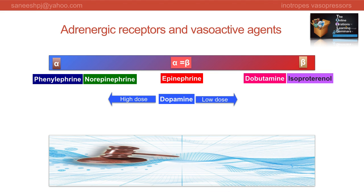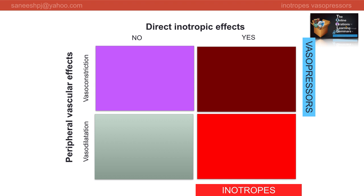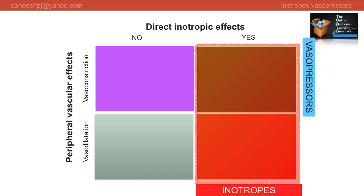Norepinephrine has predominant alpha action and hence is placed next to phenylephrine. A recent article in the Journal of Cardiovascular Pharmacology proposed a new classification of vasoactive drugs used in shock based on their direct effects on vascular tone - vasoconstriction or vasodilatation - and their direct effects on the heart - presence or absence of positive inotropic effects. Those with direct inotropic effects are inotropes, and those producing vasoconstriction are vasopressors.